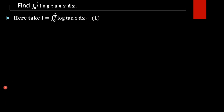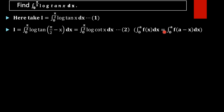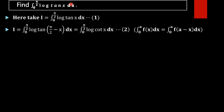In the next step, we can rewrite I as the integral from 0 to π/2 of log(tan(π/2 − x)) dx, by using the property of definite integrals: the integral from 0 to a of f(x) dx equals the integral from 0 to a of f(a − x) dx, where a equals π/2. Now, tan(π/2 − x) is cot x, so this becomes the integral from 0 to π/2 of log(cot x) dx. We take this as equation 2.